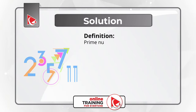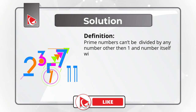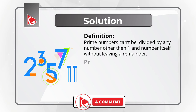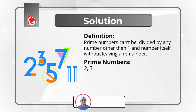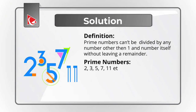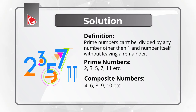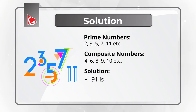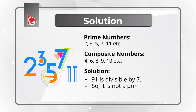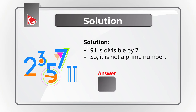Prime numbers cannot be divided by any number other than 1 and themselves without a remainder — examples include 2, 3, 5, 7, 11. The opposite are composite numbers, like 4, 6, 8, 9, 10. Out of the choices, 91 can be divided by 7, so 91 is not a prime number. The correct answer is choice D, 91.